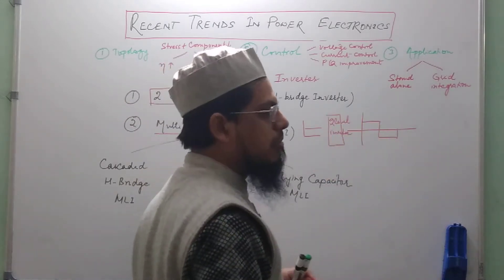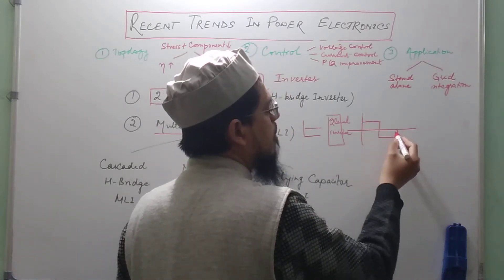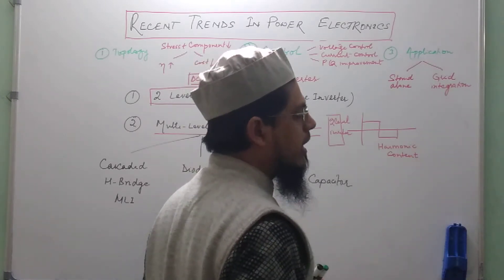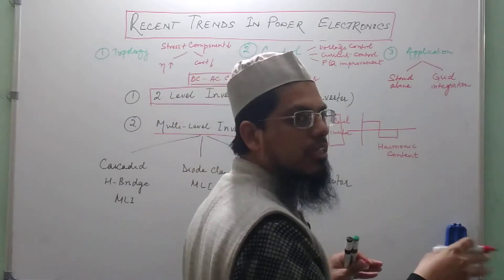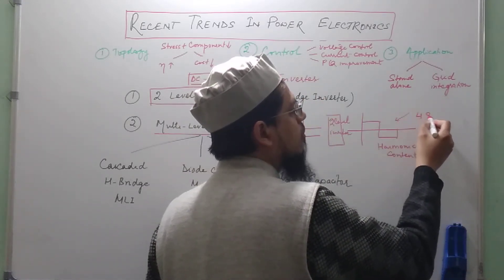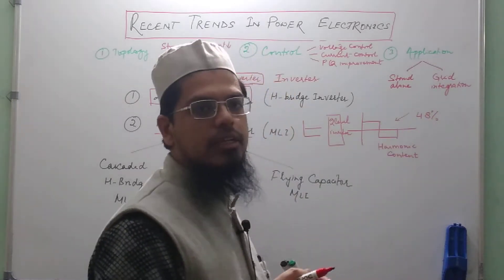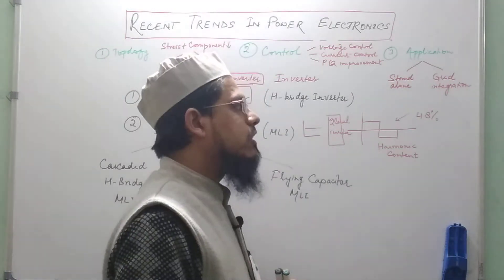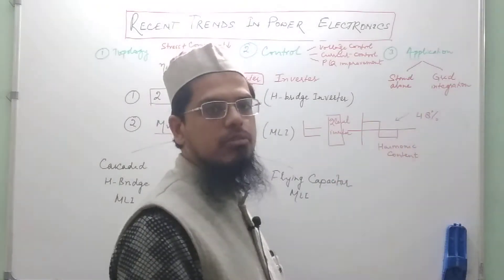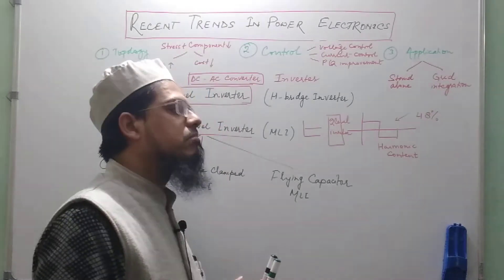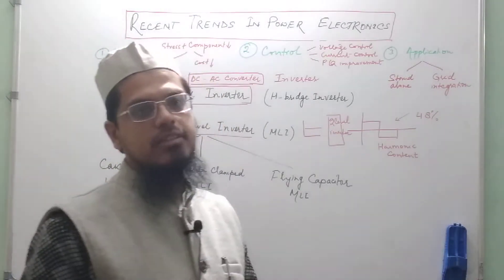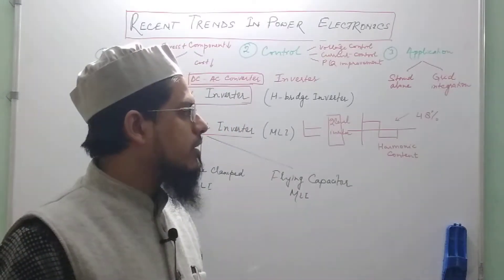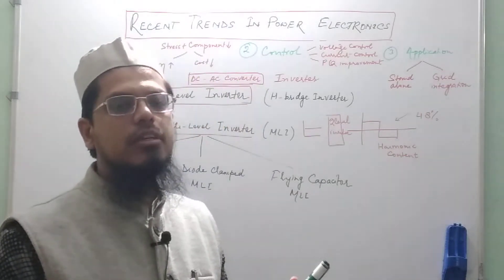What is the issue with a two-level inverter and why do we need to go for a higher number of levels? When the output voltage has got only two levels, produced from a DC voltage with the help of a two-level inverter, this type of square wave comes at the output. You could easily see that the harmonic content is very high. The THD — which is the sum total of all harmonics present in the waveform — for the square wave inverter is around 48%, which is very high.